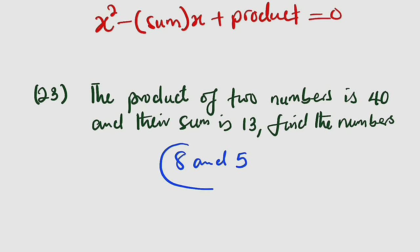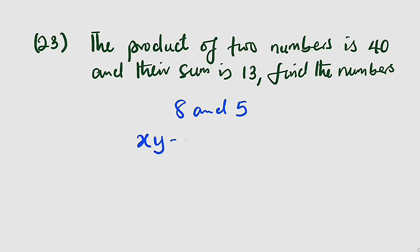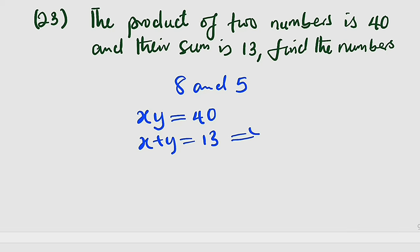But suppose it is a theory question where you have to show working — let me show you how to do that. Pick two values x and y. If you multiply x and y together you get 40, and once you add them together you get 13. This implies that x = 13 minus y, by making x the subject.